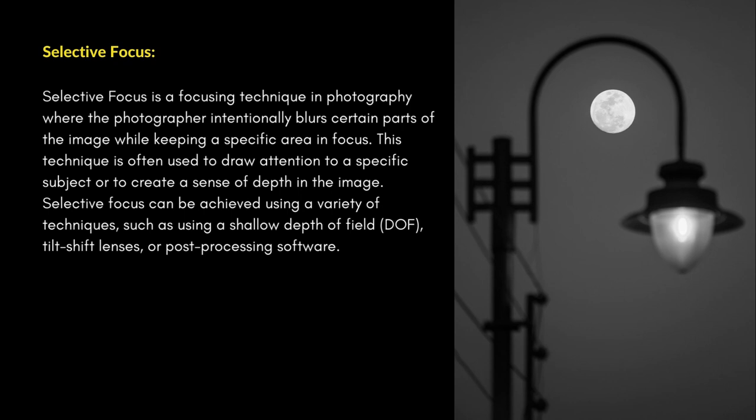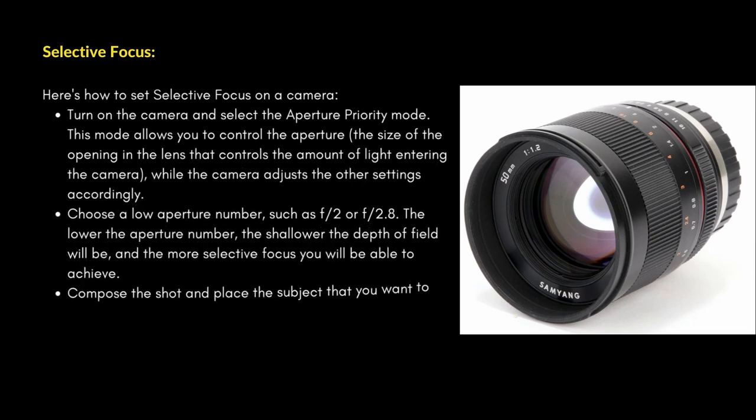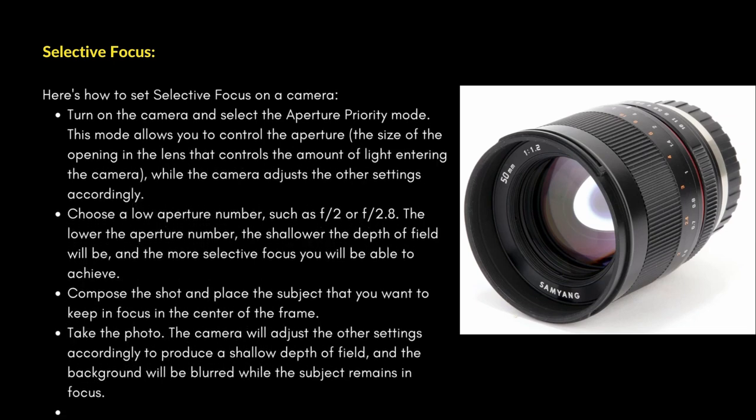Selective focus can be achieved using a variety of techniques, such as using a shallow depth of field, tilt-shift lenses, or post-processing software. To set selective focus on a camera, turn on the camera and select aperture priority mode — this mode allows you to control the aperture while the camera adjusts the other settings accordingly.